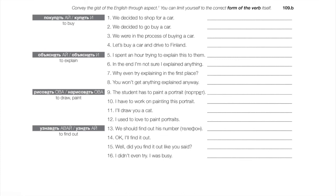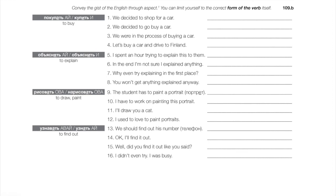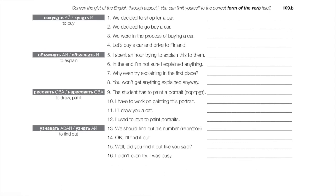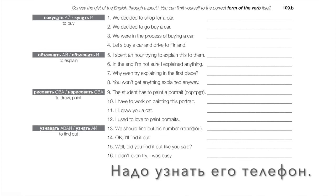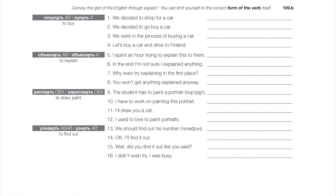Number eleven: 'I'll draw you a cat' — sounds like no big deal, just sit down and draw a cat — perfective: «я нарисую тебе кошку.» Number twelve: 'I used to love to paint portraits' — multiple portraits, a used-to statement, clearly imperfective: «я любил рисовать портреты.» Number thirteen: 'We should find out his number' — no big deal, let's just go and find out — perfective: «надо узнать его телефон.» Number fourteen: 'Okay, I'll do it' — no big whoop, I'll just go and do it — perfective: «хорошо, узнаю.» Number fifteen: 'Well, did you find out, like you said you would?' — we're assuming the вообще: we know you were supposed to do it, you wanted to do it, you said you would — so the only logical question is did you go and do it? — perfective: «узнал?»